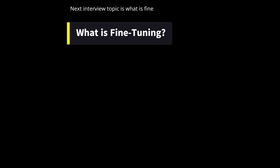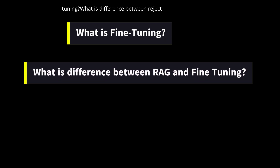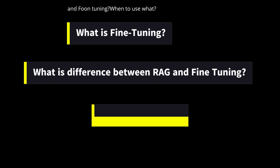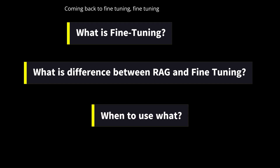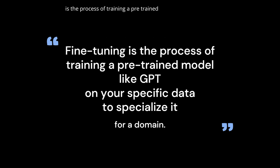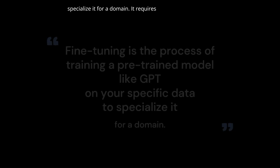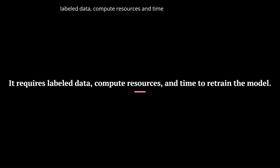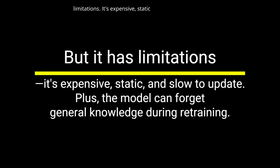The next interview topic is: what is fine-tuning, what is the difference between RAG and fine-tuning, and when to use what? Fine-tuning is the process of training a pre-trained model like GPT on your specific data to specialize it for a domain. It requires labeled data, compute resources, and time to retrain the model. But it has limitations — it's expensive, static, and slow to update. Plus, the model can forget general knowledge during retraining.